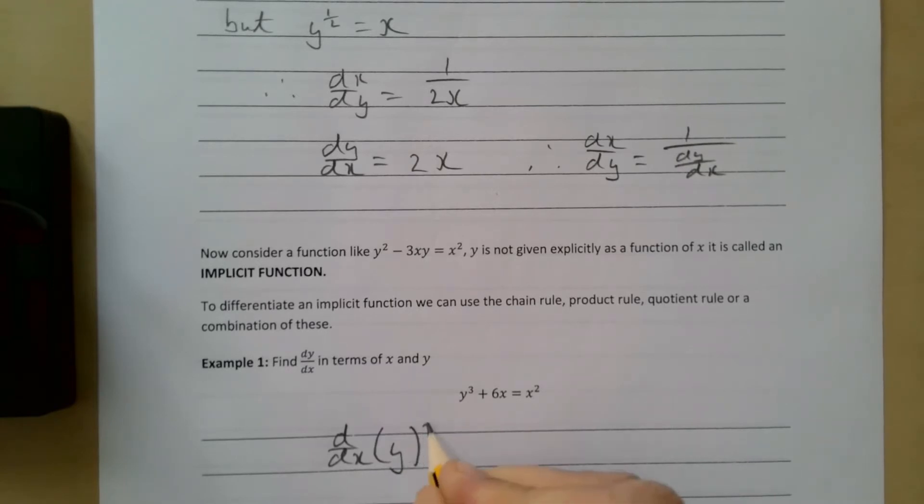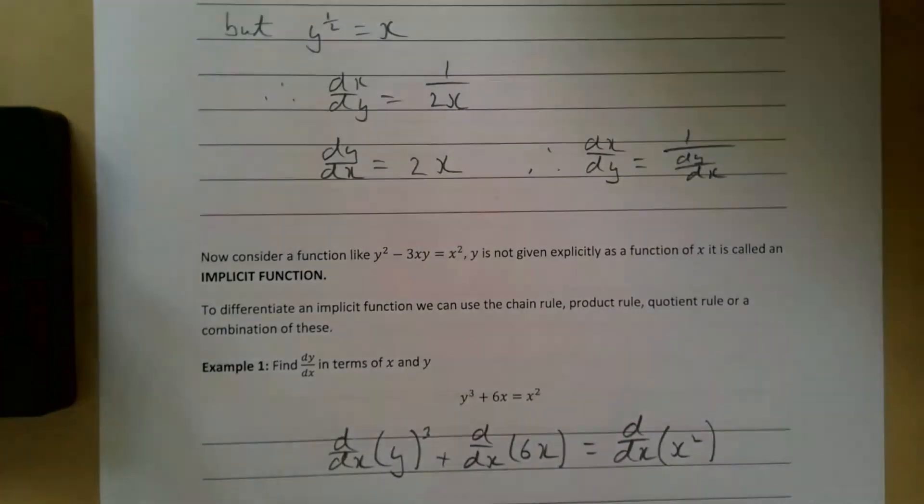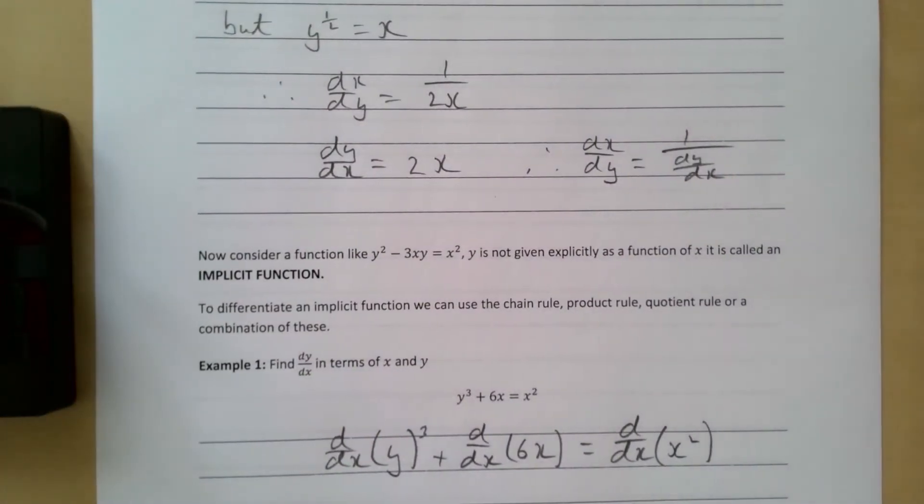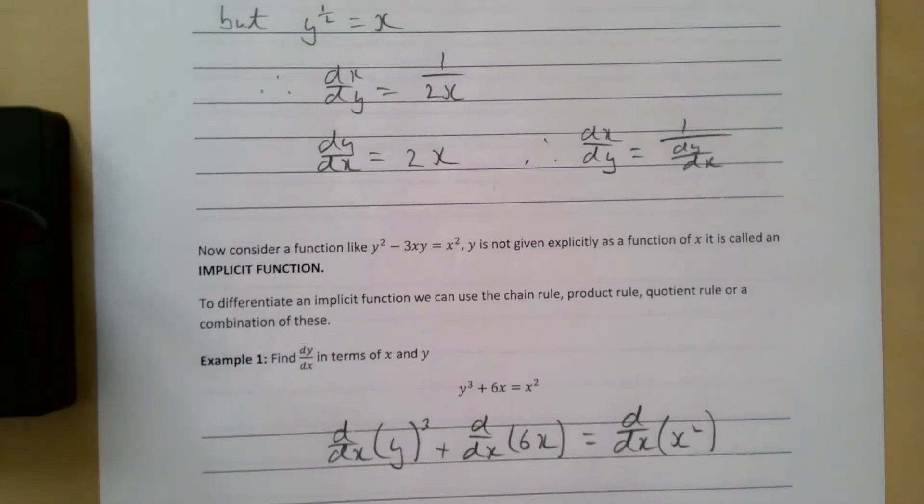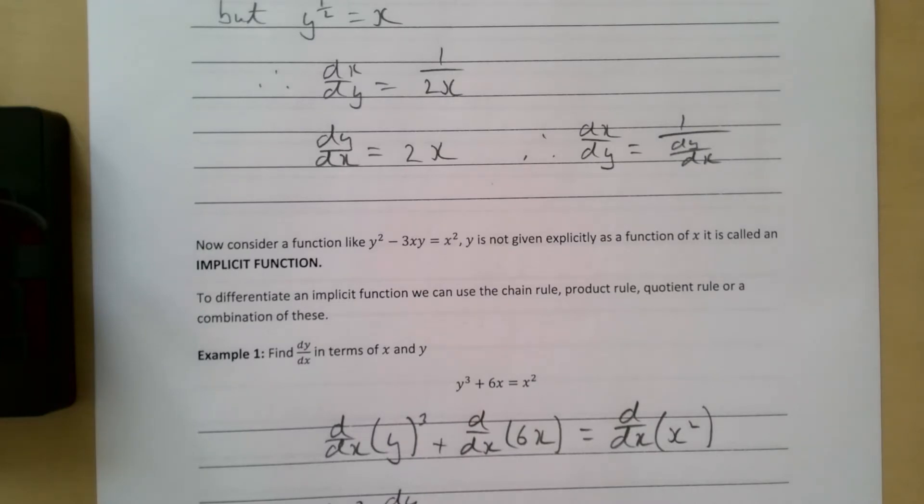We want to differentiate everything with respect to x. Here's the trick: if you're differentiating this with respect to x, you differentiate it as if it was an x, so you get 3y² and multiply it by dy/dx. This gives us 3y² dy/dx. The rule is: if it's a y and we're differentiating with respect to x, you differentiate it as normal, then multiply by dy/dx.